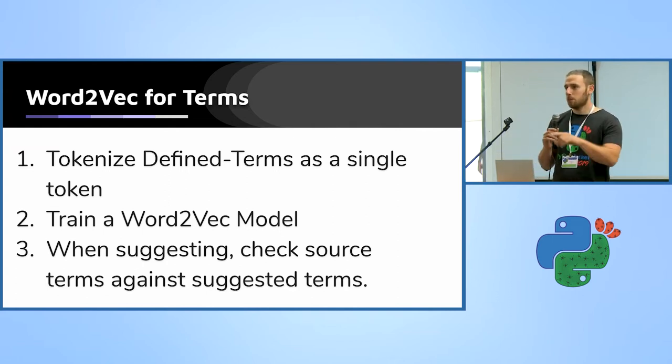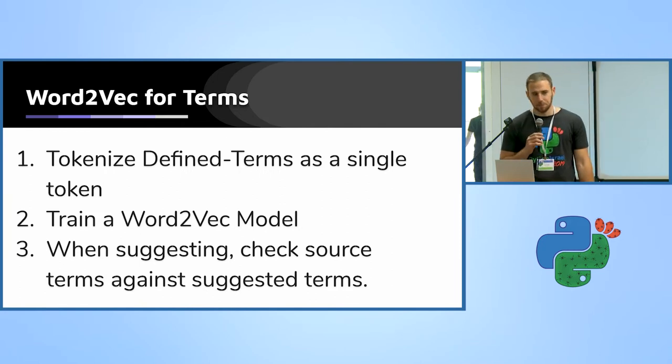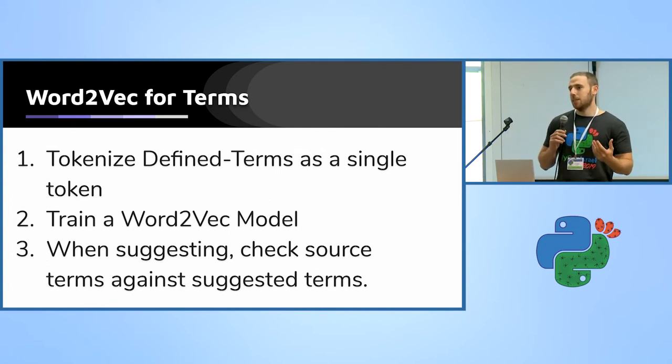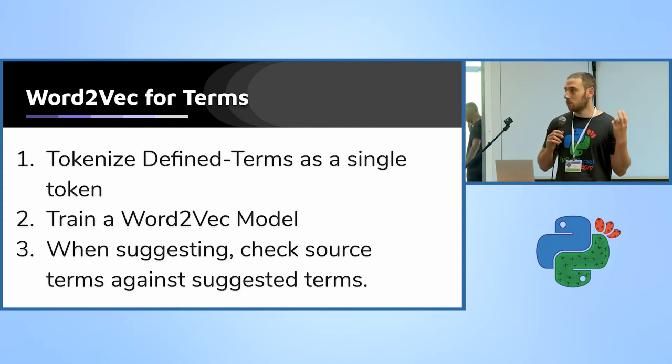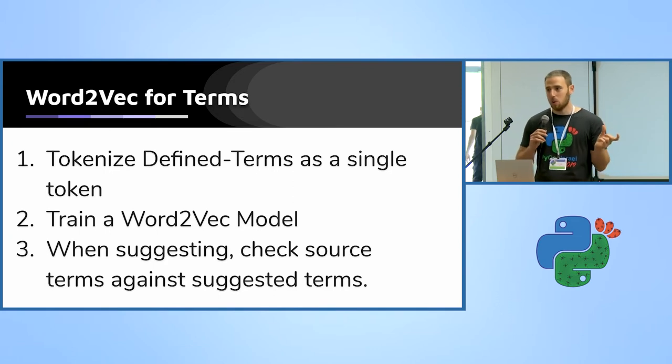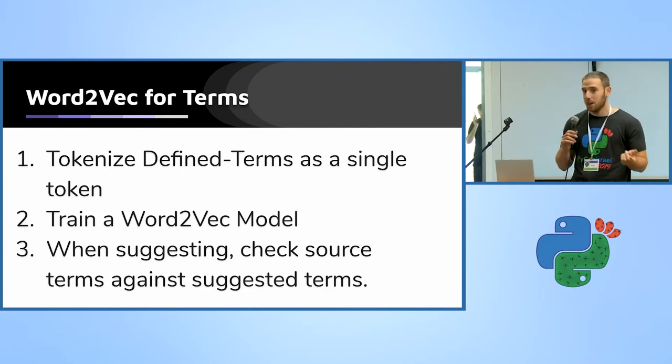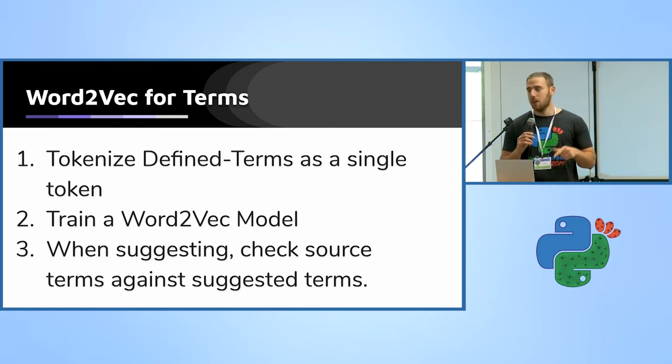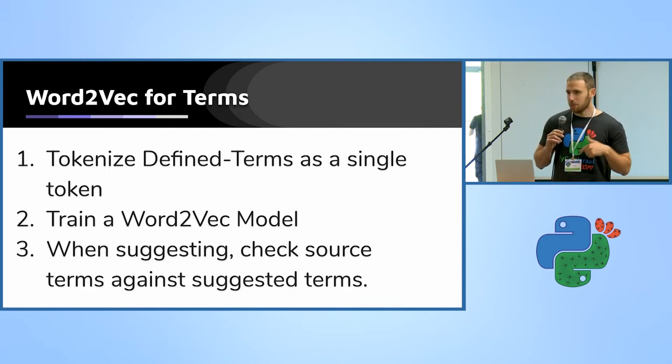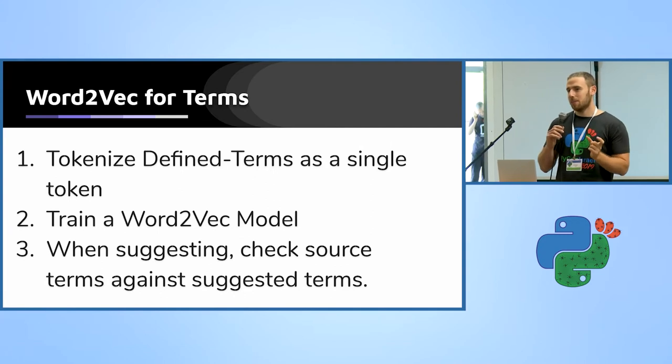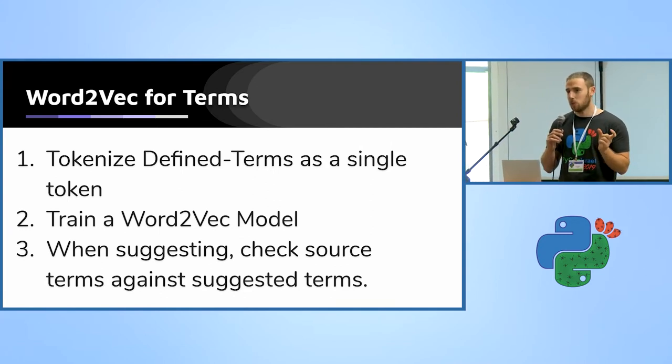So to account for this issue, we tackled it with the Word2Vec model. How many of you have heard about the Word2Vec model? Great, that's a lot of hands. So it worked almost perfectly in our case. What we did is in the first stage, we actually split the document into tokens according to the defined terms. For example, 'governing law' would be a single token in our tokenization, which if you were to split according to white space, it would be two tokens. Then we trained our own Word2Vec model on legal contracts and other publicly available legal documents.